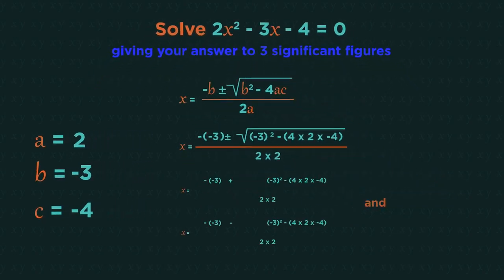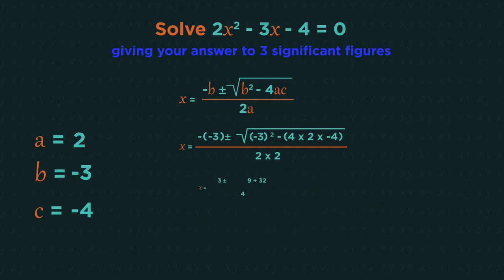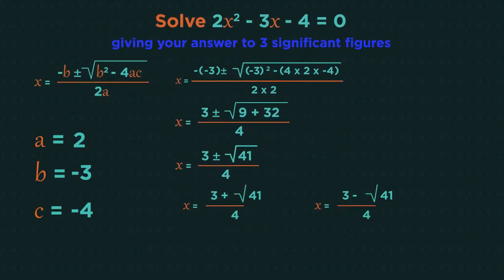We can either type that straight into our calculator. So minus minus 3 plus everything for one answer. And then to get the second answer, type in minus minus 3 minus everything. Or we can simplify it a bit further. 3 plus or minus the square root of 41 all divided by 4. And then type this into our calculator.